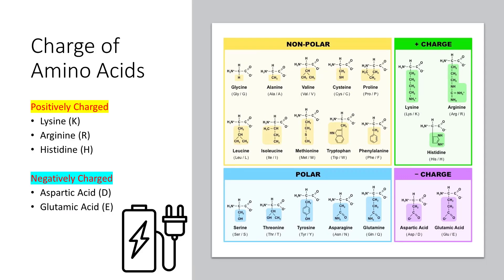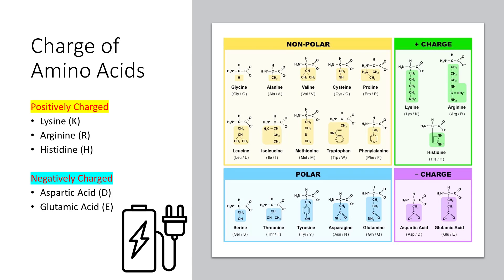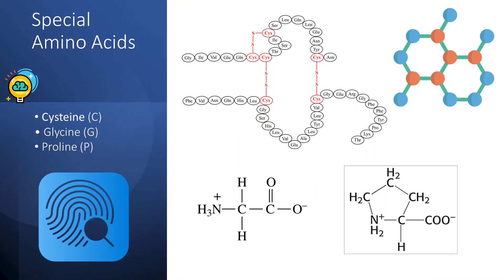The last two categories refer to amino acids with charged properties. The positively charged cluster includes three members: lysine, arginine, and histidine. The negatively charged cluster has two members: aspartic acid and glutamic acid respectively. Worth mentioning is a special category that includes three amino acids — cysteine, glycine, and proline.